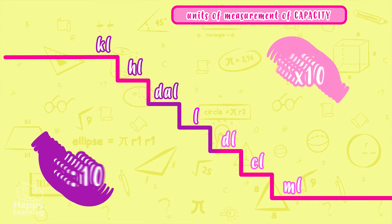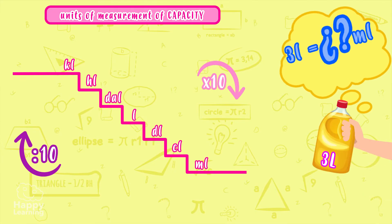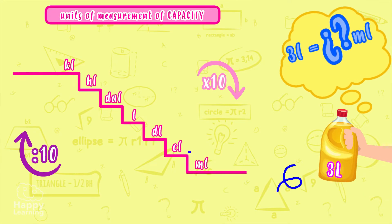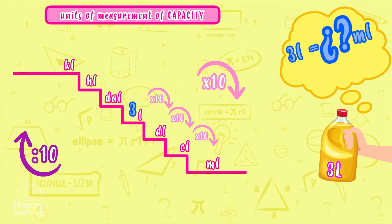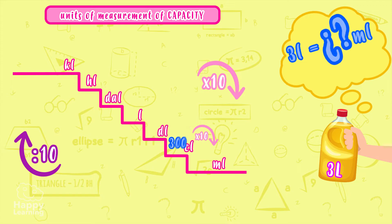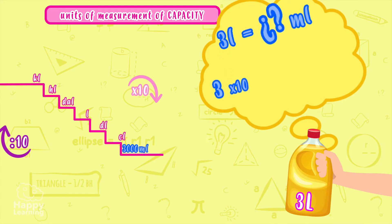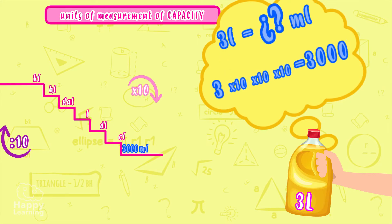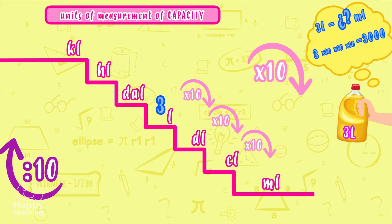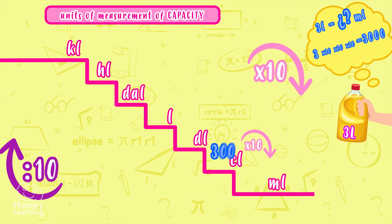Let's look at an example. We want to know how many milliliters there are in a 3-liter bottle. We start at the liter and go down 1, 2, 3 steps until we reach milliliters. So we multiply by 10 three times — or in other words, add a zero for every step we go down. That gives us 3,000 milliliters.